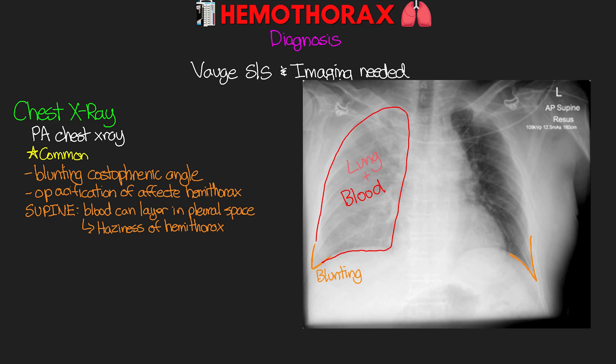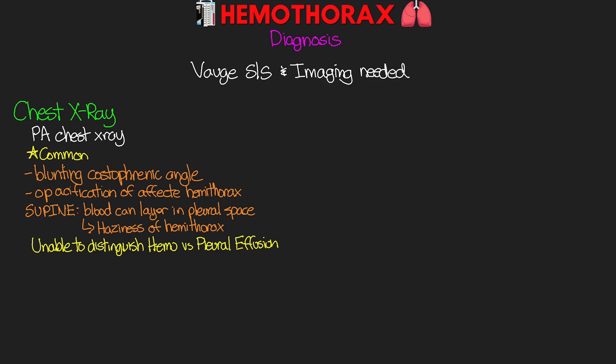One important thing to know is that with the chest x-ray we're not going to be able to distinguish between a hemothorax and some other pleural effusion. Obviously our history of what's going on with the patient plays into that — clearly if they're a trauma patient we can pretty much assume it's going to be a hemothorax.